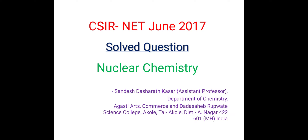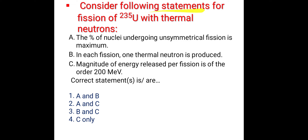Hi, welcome. Today we are going to solve a simple question of nuclear chemistry. It was asked in CSIR net June 2017 question paper. The question is: consider the following statements for fusion of uranium-235 with thermal neutrons. Statement A: the percentage of nuclei undergoing unsymmetrical fission is maximum. Statement B: in each fission one thermal neutron is produced. Statement C: magnitude of energy released per fission is of the order 200 mega electron volts. The options are: option 1 is A and B, option 2 is A and C, option 3 is B and C, and option 4 is C only.